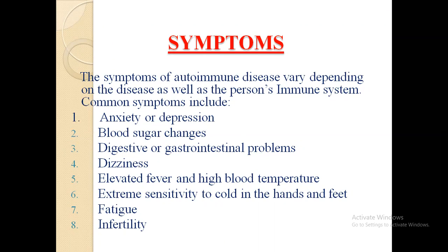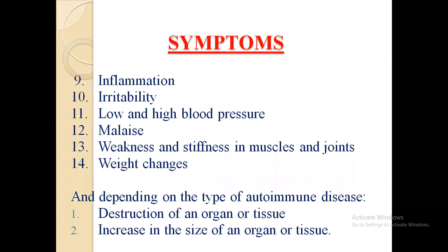High body temperature, extreme sensitivity to cold in the hands and feet, infertility, inflammation, irritability, low and high blood pressure, muscle weakness and stiffness in muscles and joints. Rates vary depending on the type of autoimmune disease, and there may be restriction or increase in size of an organ or tissue.